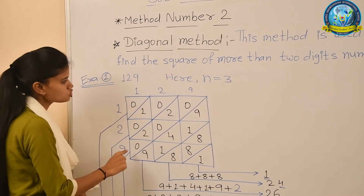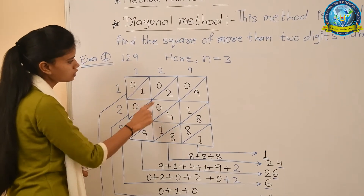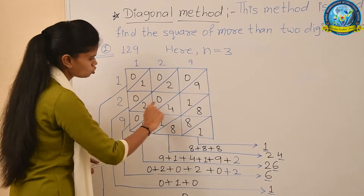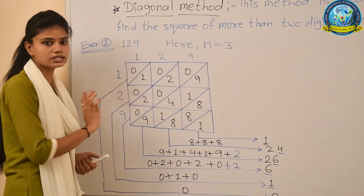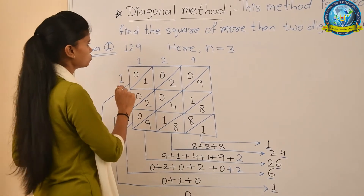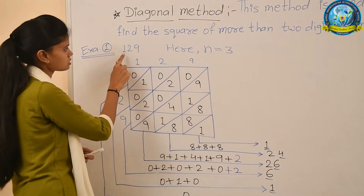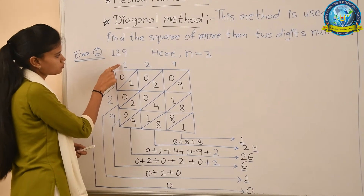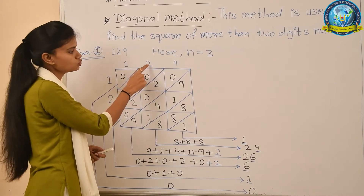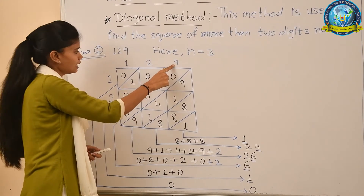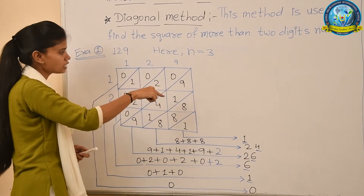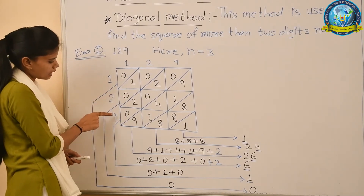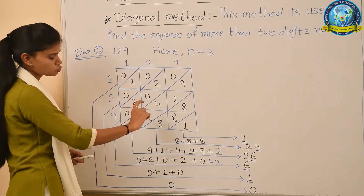According to n equals 3, we draw a table of 3 columns and 3 rows. I have drawn that table here. It has 3 columns and 3 rows. In this table, we place the digits of the number: 1 in the first column, 2 in the second column, and 9 in the third column. Similarly, we place 1, 2, and 9 in the rows as well.